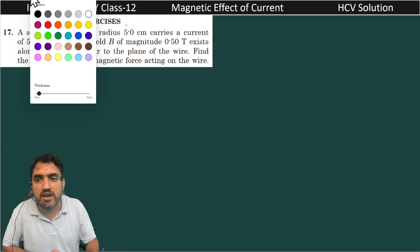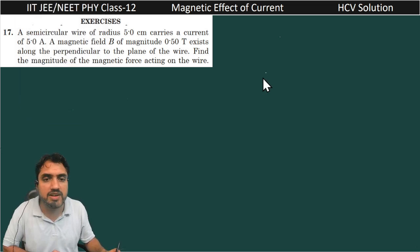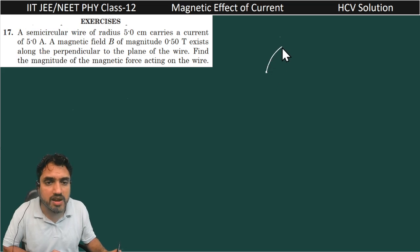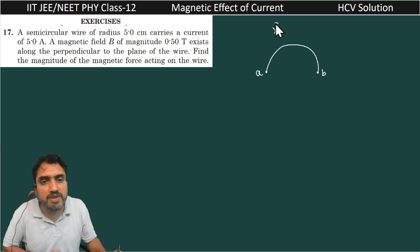So now we are considering one wire of semicircular shape. This is one wire of semicircular shape, and these are the two ends A and B. And this magnetic field B we are considering, which is into the plane of this paper. And this semicircular wire is carrying current I.